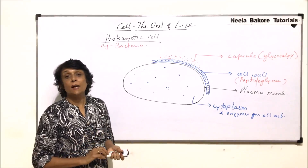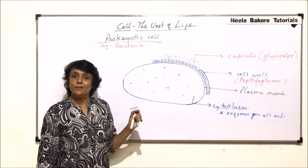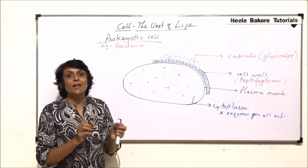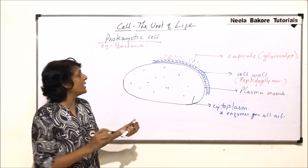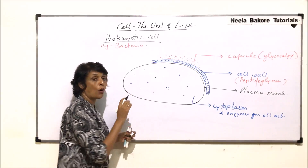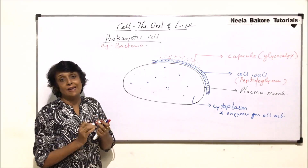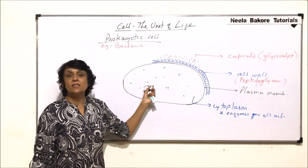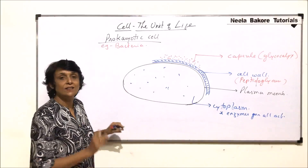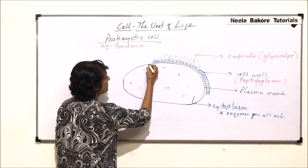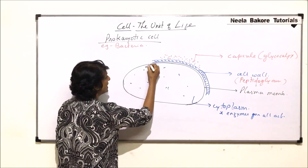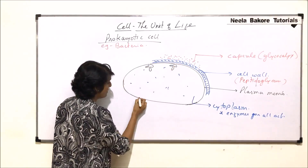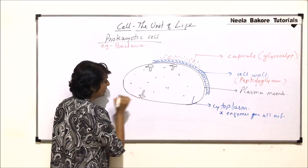These are prokaryotic cells — 'pro' means primitive, 'karyon' means nucleus — so there is no nuclear membrane. The genetic material is present in the form of a circular DNA. The plasma membrane has some infolds at certain areas, and attached to these infolds we may find the circular DNA.